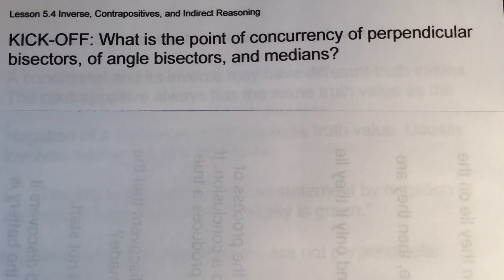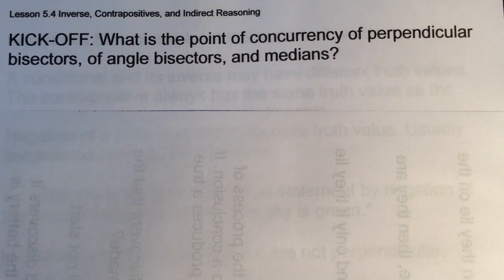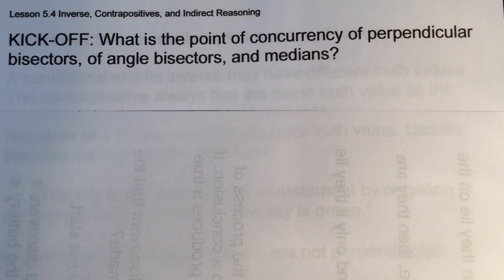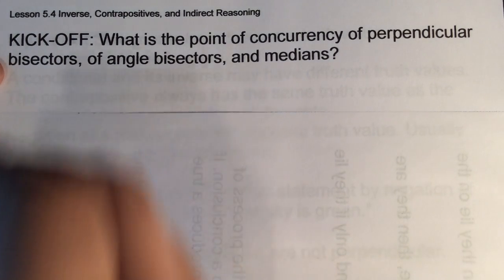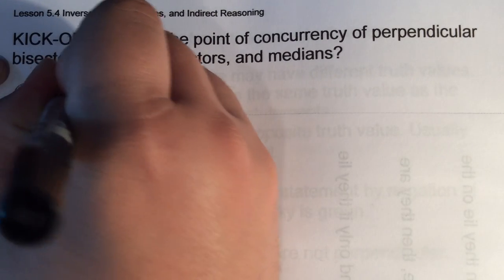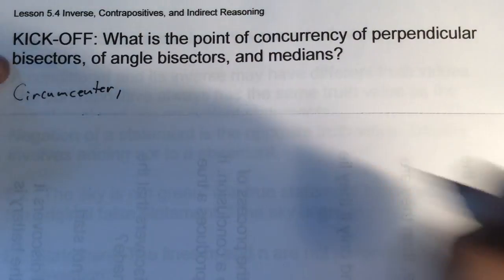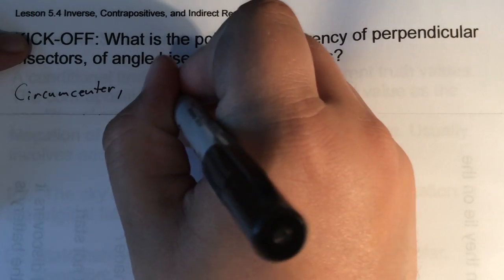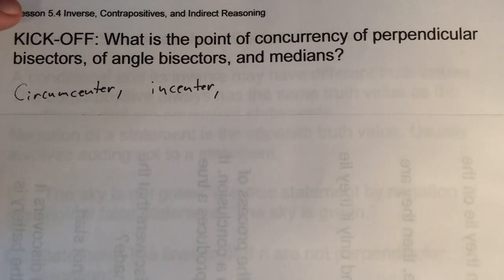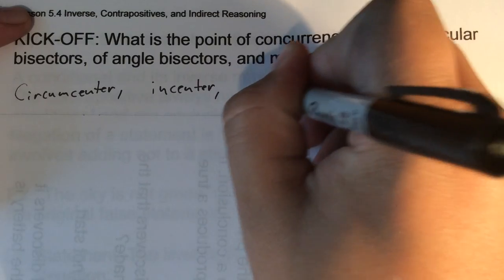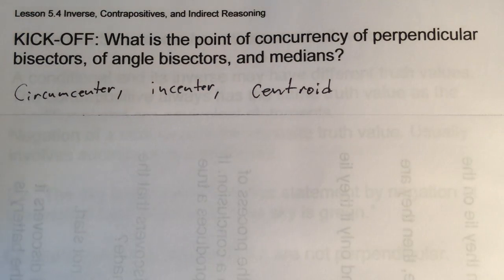Continuing on through chapter 5 — last lesson we talked about points of concurrency: perpendicular bisectors, angle bisectors, medians. The point of concurrency of perpendicular bisectors is the circumcenter, angle bisectors give the incenter, and all the medians meet at the centroid, which is a cool name.